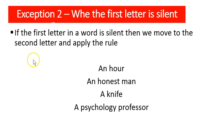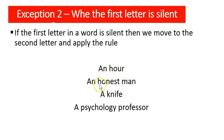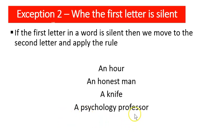The second exception: when the first letter in a word is silent, we move to the second letter and apply the rule. For example, 'hour' — H is silent, so we move to the second letter O, which is a vowel, so it is 'an hour.' 'An honest man' — H is silent, second letter is a vowel, so 'an honest man.' 'Knife' — K is silent, N is a consonant, so 'a knife.' 'A psychology professor' — P is silent, S is a consonant, so 'a psychology professor.'